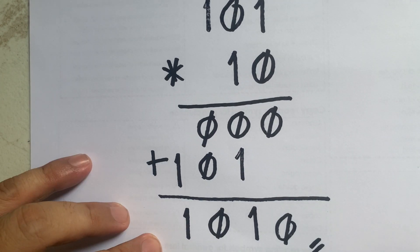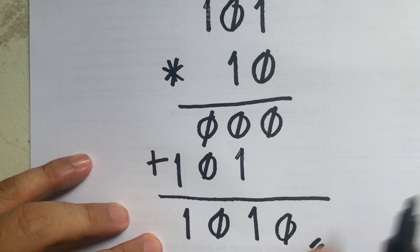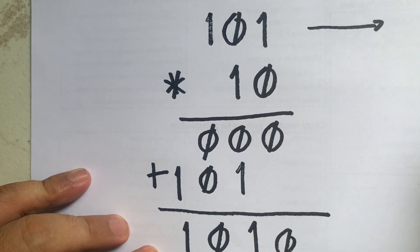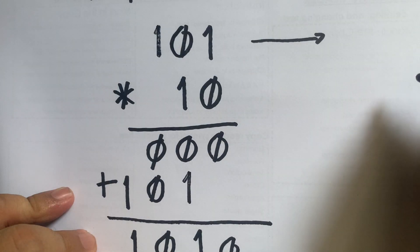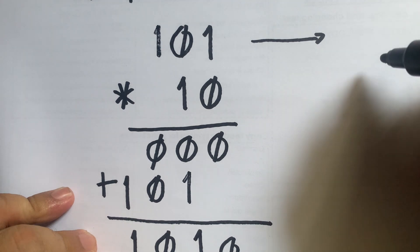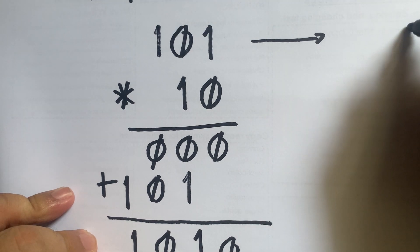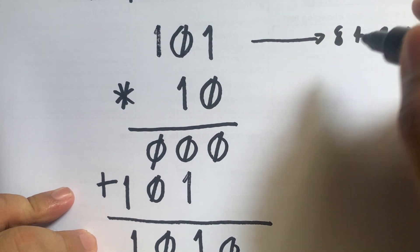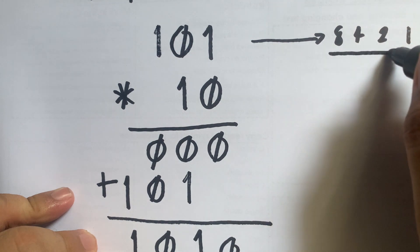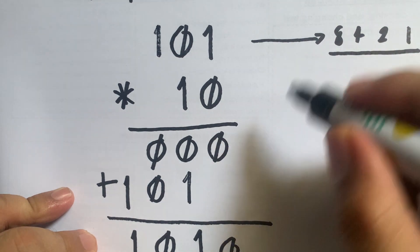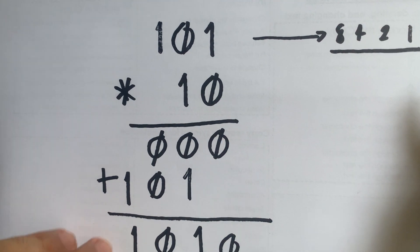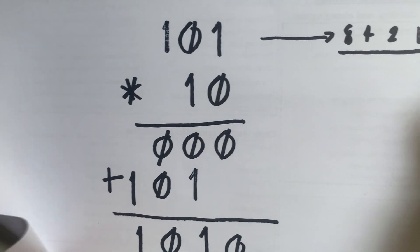To check if our answer is correct, we convert 101 back to decimal. We use the positional values 1, 2, 4, 8. Since we only have two and three digits, we apply those positional values.